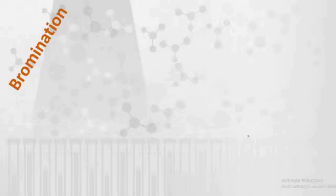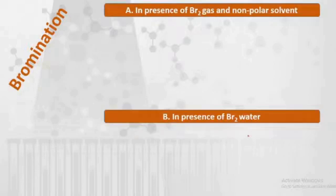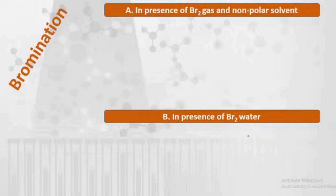Bromination reaction can take place under two different conditions, and we can apply these particular conditions to obtain the specific product we want. The first reaction takes place in the presence of bromine gas and a nonpolar solvent like CS₂ or acetone. These are the solvents used for the preparation of bromophenols.